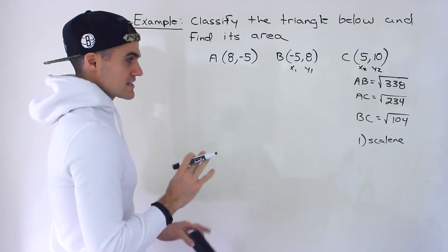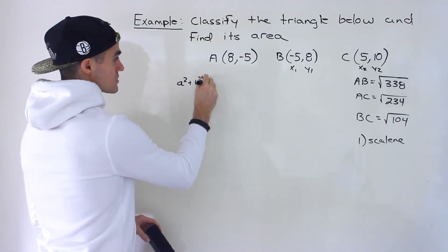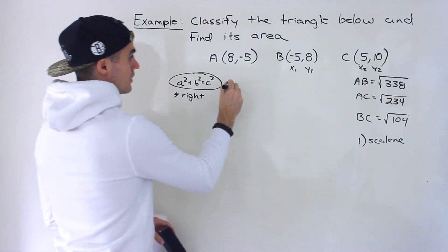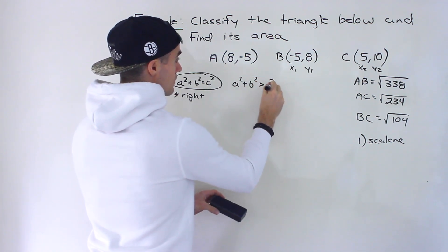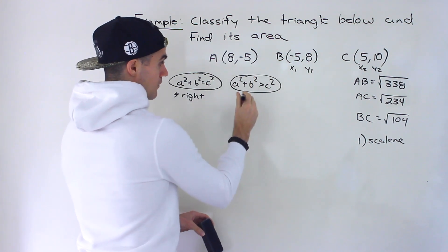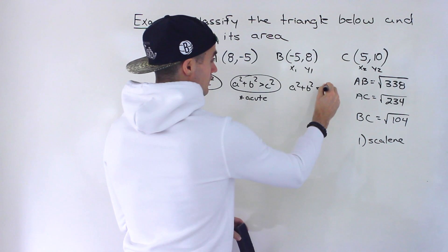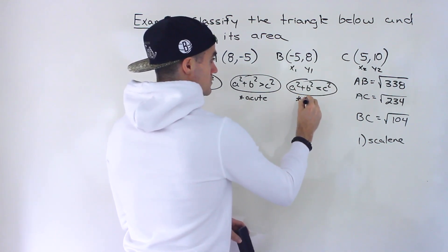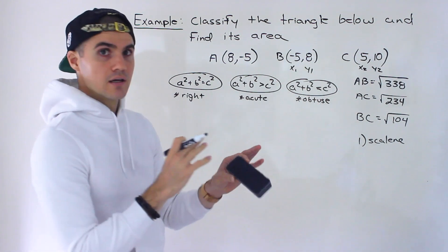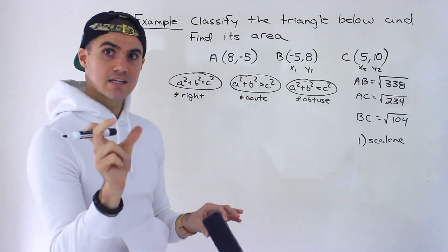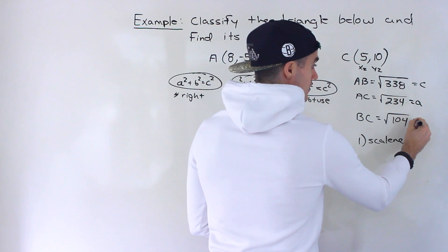The next step is to use the Pythagorean identity and see whether a² + b² equals c². If they're equal, we have a right triangle. If a² + b² is greater than c², we have an acute triangle. If a² + b² is less than c², we have an obtuse triangle. We need to label the sides: a and b are the two shorter sides, and c must always be the longest side. The longest here is √338, so let c = √338, a = √234, and b = √104.